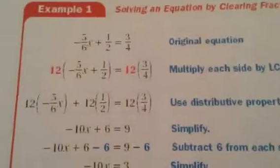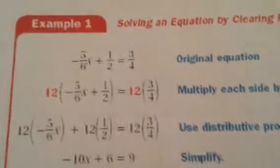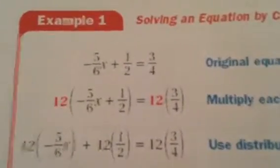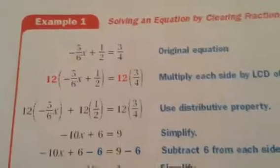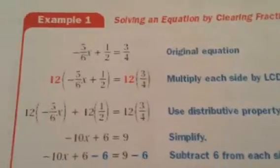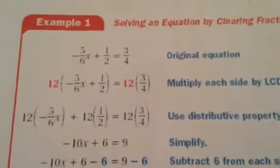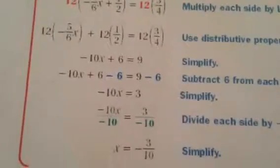Another method for clearing fractions is to take your equation and multiply both sides by the least common multiple of all denominators, and then solve normally.